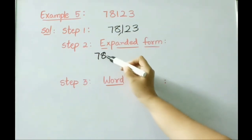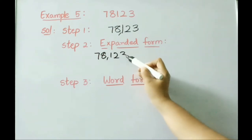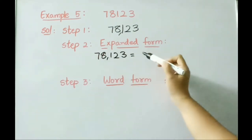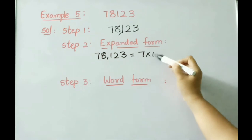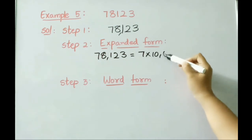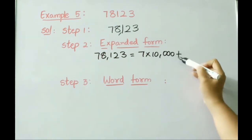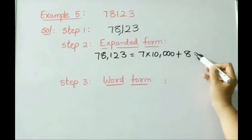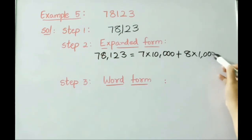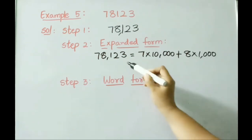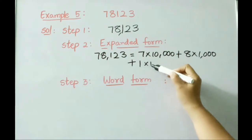Seventy-eight thousand one hundred twenty-three: ten thousands place 7, so write 7 × 10,000; thousands place 8, so write 8 × 1,000; hundreds place 3, write 3 × 100; tens place 4, write 4 × 10; ones place 9, write 9 × 1.